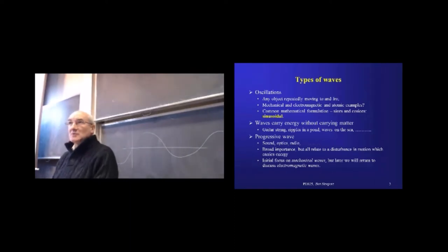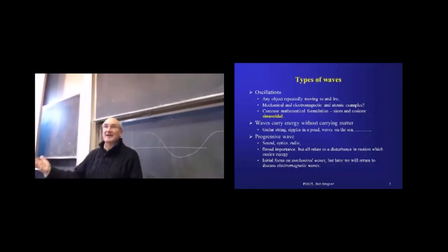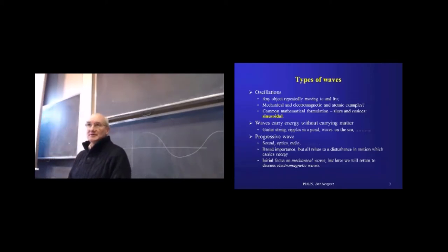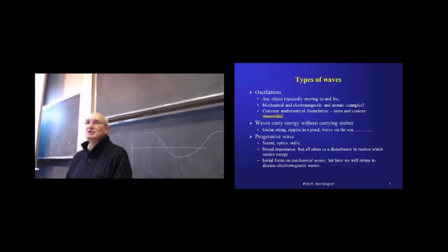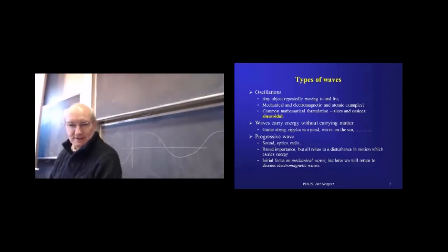Initially it's going to be mechanical waves — vibrations on a guitar string, on a spring, in water, in air if we're using sound. That's a mechanical wave; it actually involves an oscillation of a material substance. As distinct from an electromagnetic wave, which is not — that is a variation in the field strength of electric and magnetic fields. It doesn't involve matter at all. That's quite an important distinction.